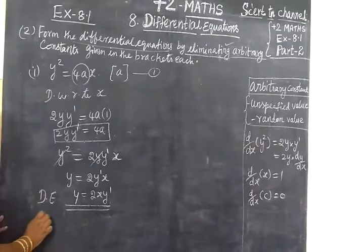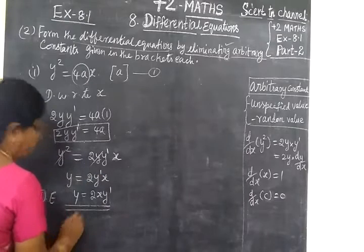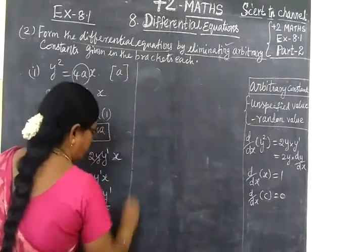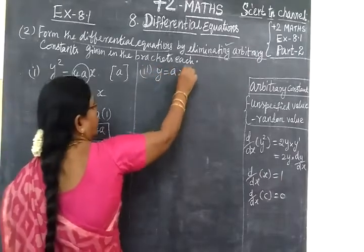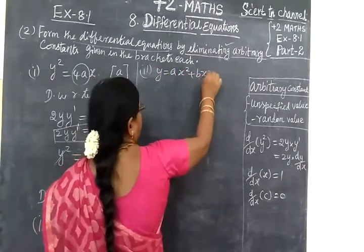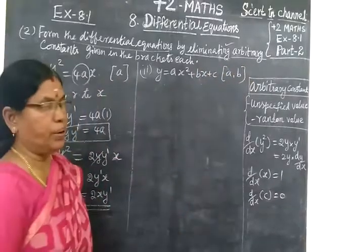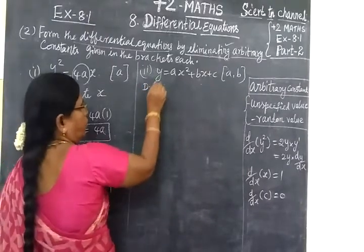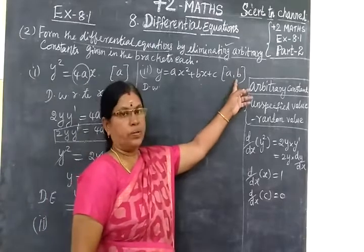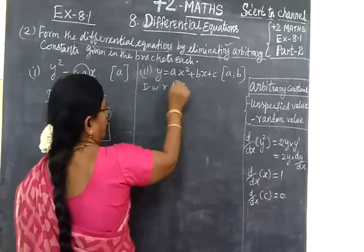Now, the second question. Y equals as² plus bs plus c. In the arbitrary constants: A and B — so we should eliminate A and B. Differentiate after 2 times. Then the arbitrary constants render. Two times differentiable. So, differentiate with respect to s.